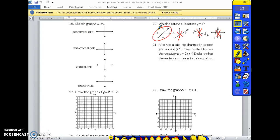Al drives a cab. He charges $4 to pick you up, so that's your initial fee, plus $2 for every mile. That's your slope. He uses the equation y equals 2x plus 4. Explain what the variable x means in this situation. If $2 per mile, x represents how many miles Al drives you.